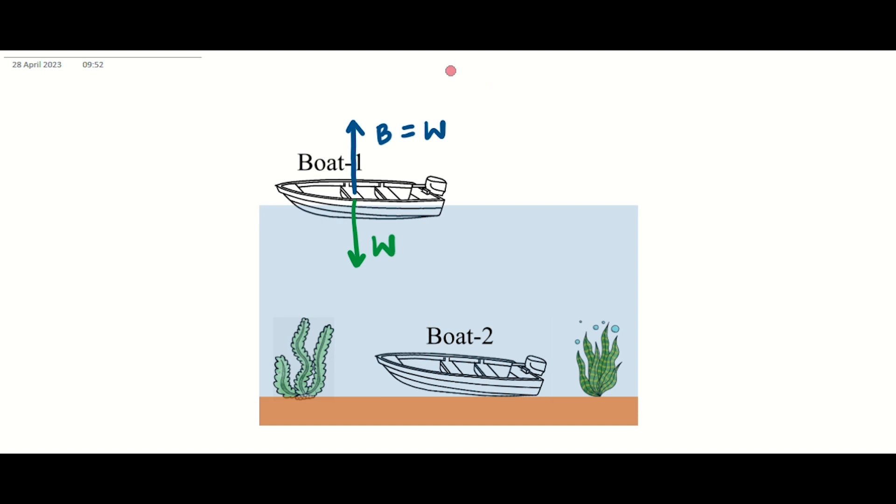However, for this second boat, it has sunk to the bottom which means the weight of this boat is not balanced by the buoyant force on this boat. So we will draw a shorter arrow. This tells us that second boat is displacing less water than first boat.